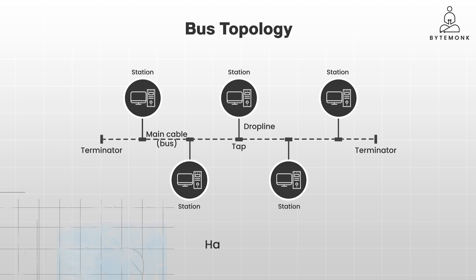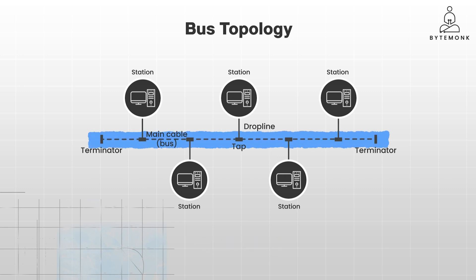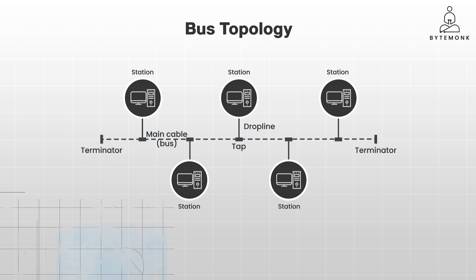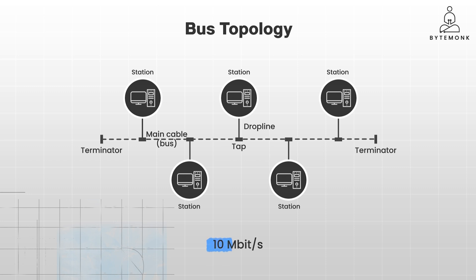Bus topology is half-duplex, meaning data can travel in both directions on the bus, but only one direction at a time. A network operating in half-duplex mode is prone to congestion and can be impractical. This type of topology was popular back in the 90s and its maximum speed is 10 Mbps.